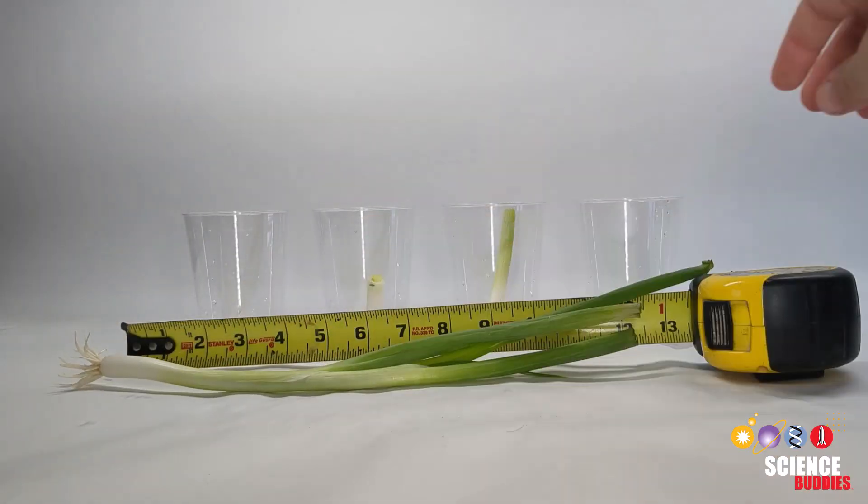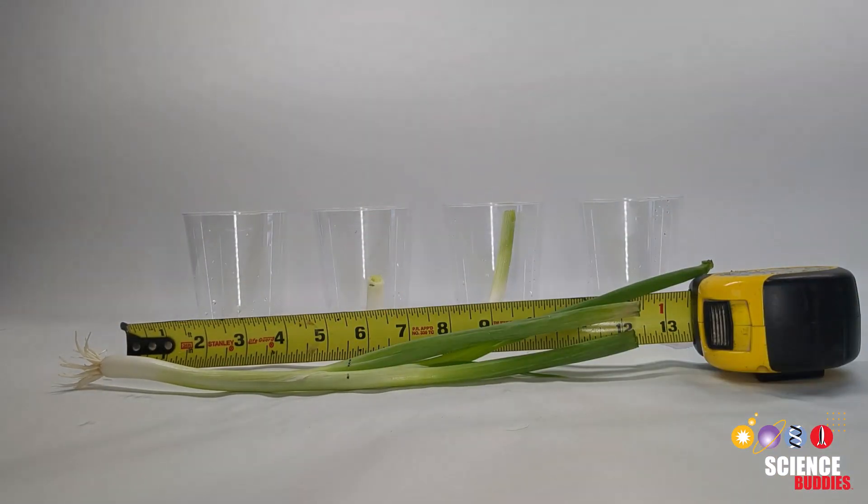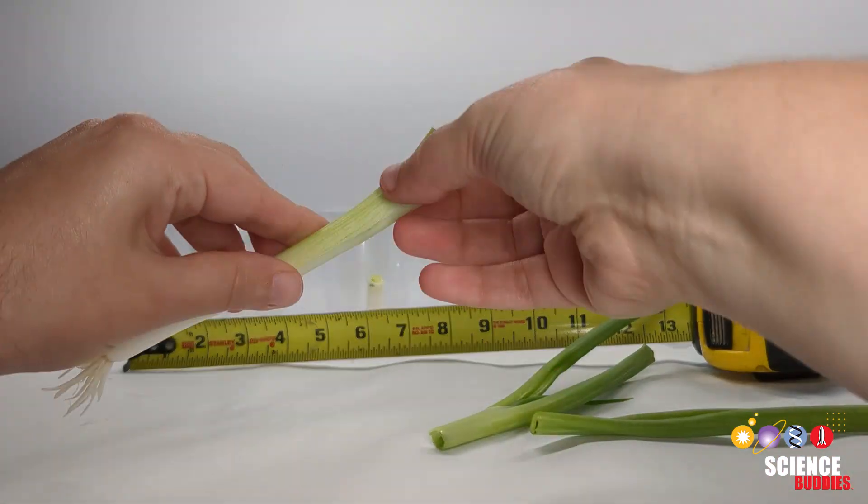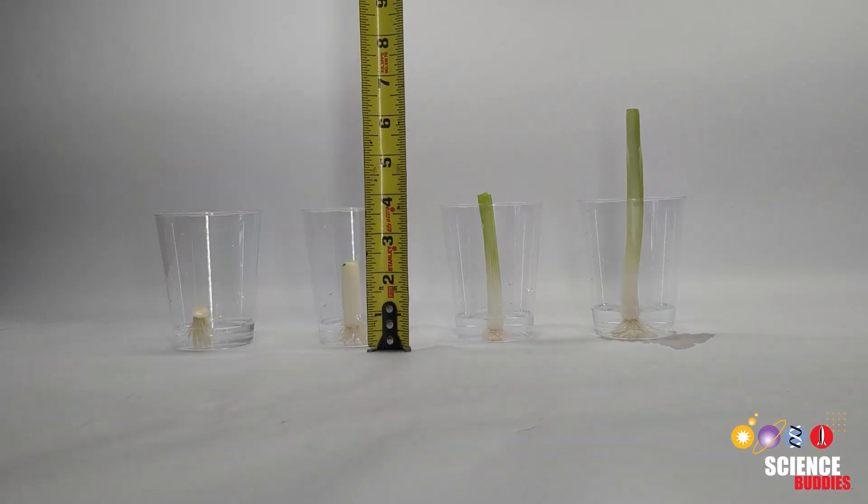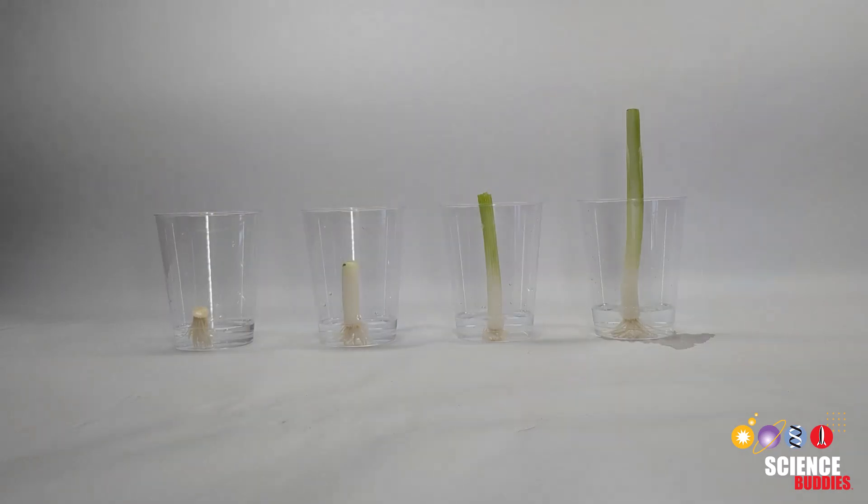Measure the growth of each shoot daily and record your findings in your lab notebook. If the plant is able to regenerate, the longer you run the experiment, the more growth you should see. However, not all plants are able to regenerate.